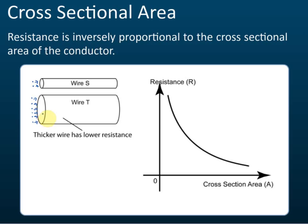A resistor with a bigger cross-sectional area allows more electrons to pass through, and as a result the resistance is lower. If resistance is high, current is lower — meaning fewer electrons pass through. But if more electrons can pass through in a given time, the current is high and therefore the resistance is low. So remember: high resistance means lower current, and low resistance means higher current.